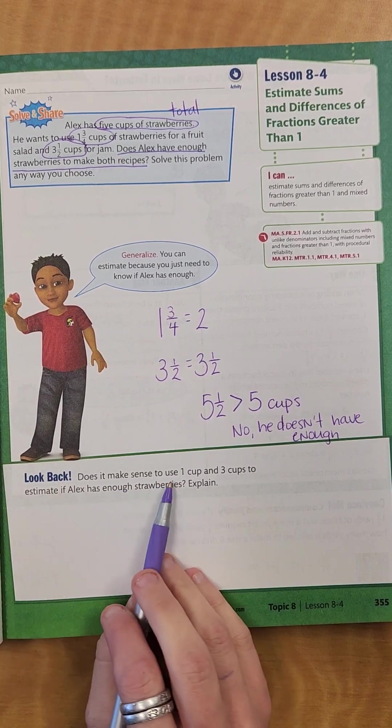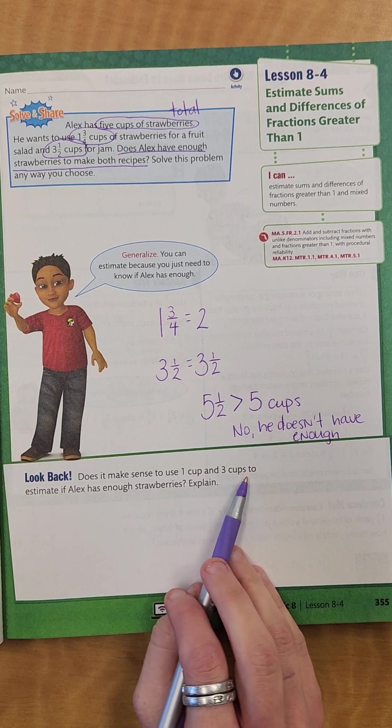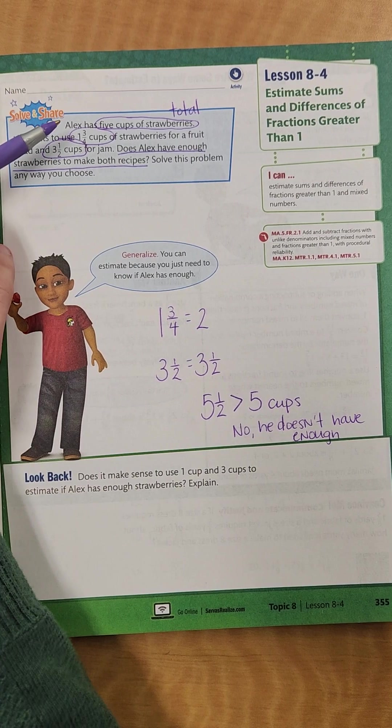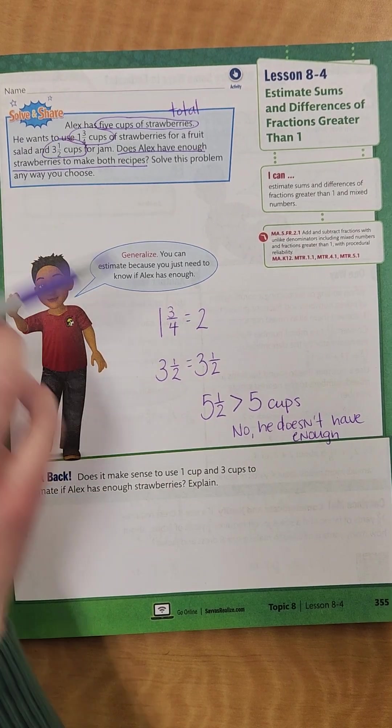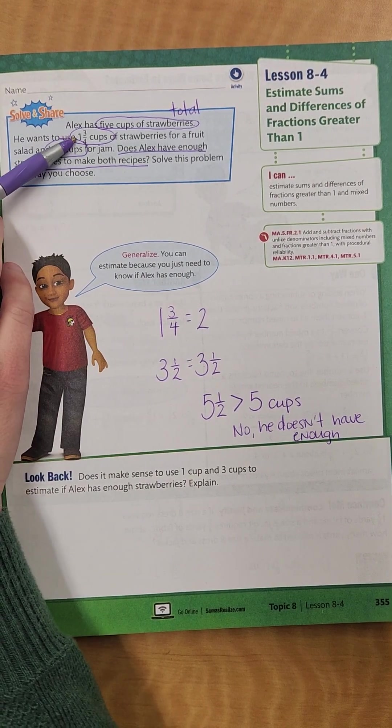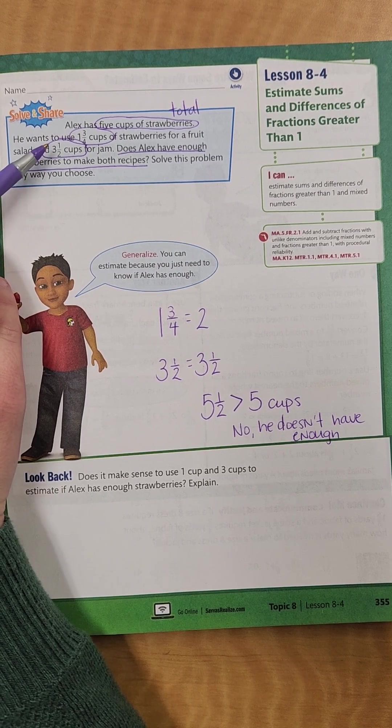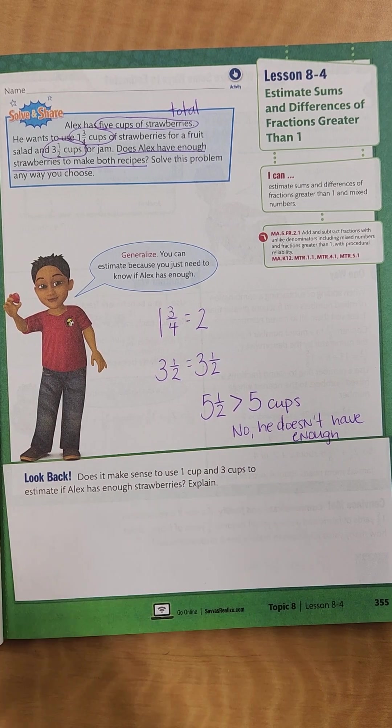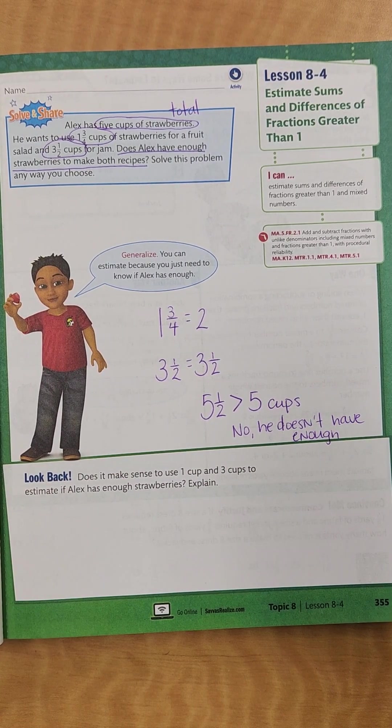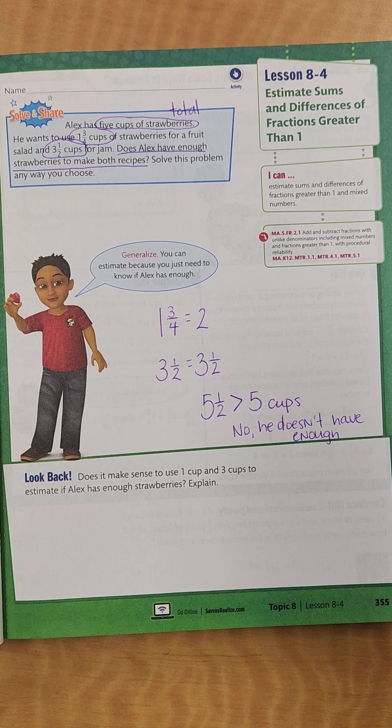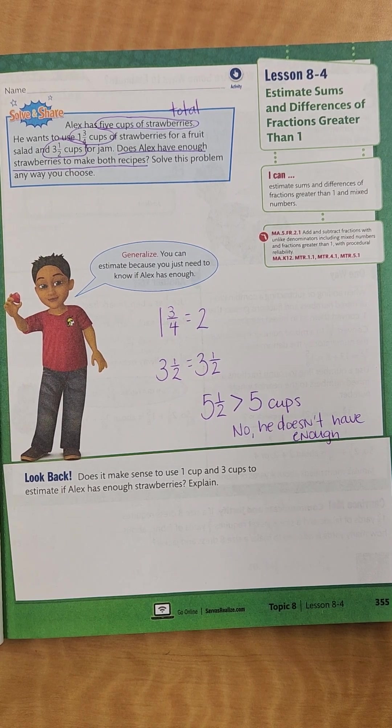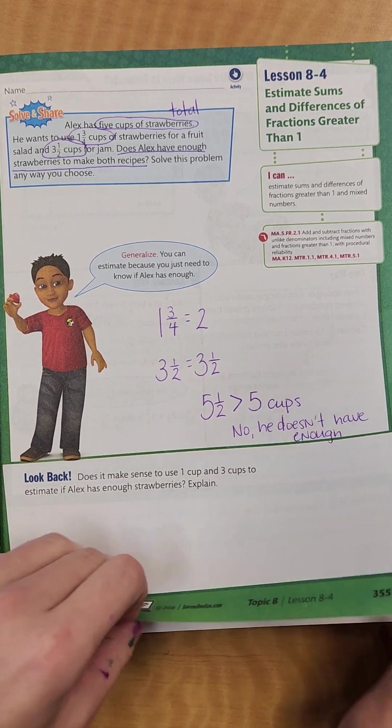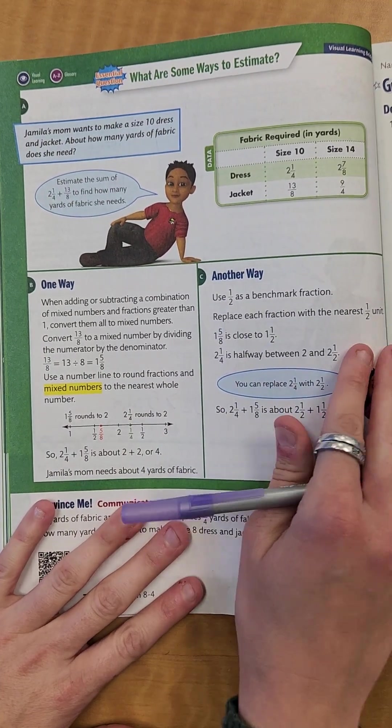So the second part says, does it make sense to use 1 cup and 3 cups to estimate if Alex has enough strawberries? So if we use this, instead of rounding that up to 2, they're saying just have 1 cup and then 3 cups. Would that make sense? We could say no, because both whole numbers are going to be less than the actual amount. So that estimate would be less than your actual answer. So that wouldn't work. We're just talking about that out loud. You don't have to write anything for that. I know y'all hate writing.